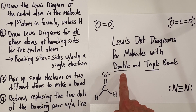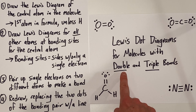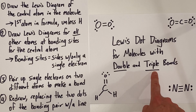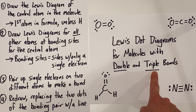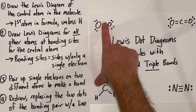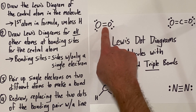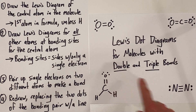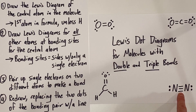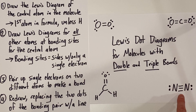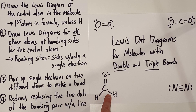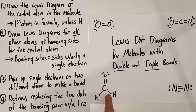Double bonds are when you have two shared pairs of electrons between the same two atoms, and triple bonds are when you have three shared pairs of electrons between the same two atoms. They're indicated with two lines looking like an equals mark for a double bond, and three lines going across between the two atoms for a triple bond. A single bond has just one shared pair, shown as one line between the same two atoms.